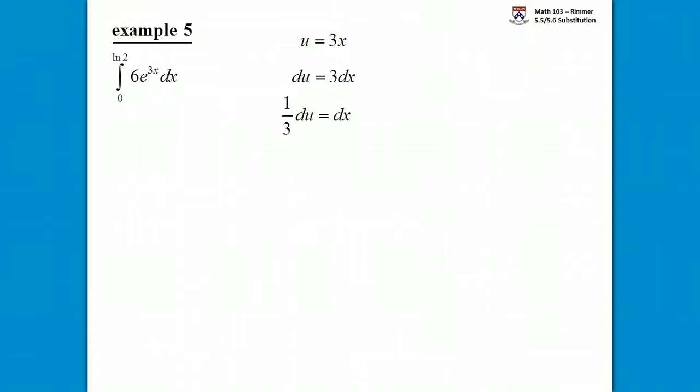So now we substitute. The 6e to the 3x is going to become 6e to the u. The dx is going to become 1 third of du, and we integrate. The 6 and the 1 third can multiply to give you 2, and we can pull that 2 outside. So we end up with 2 times the integral of e to the u.